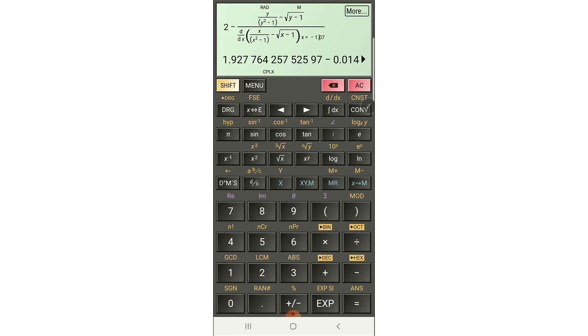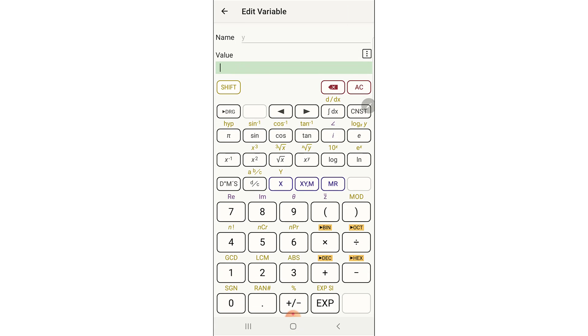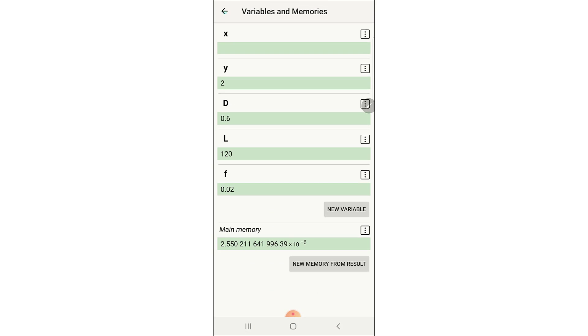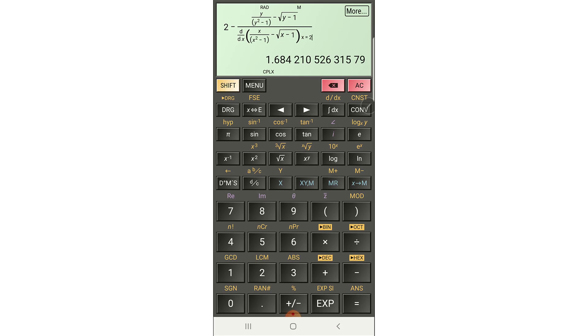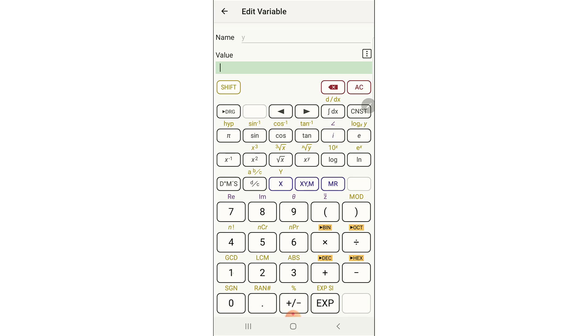2 and then for y, 2. 1.68, that's the second x obtained by Newton's method so let's use that. 1.68 and then for y, 1.68.